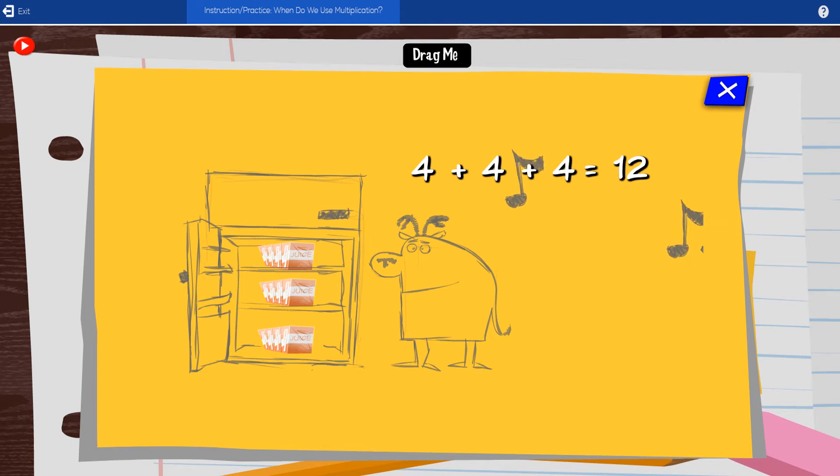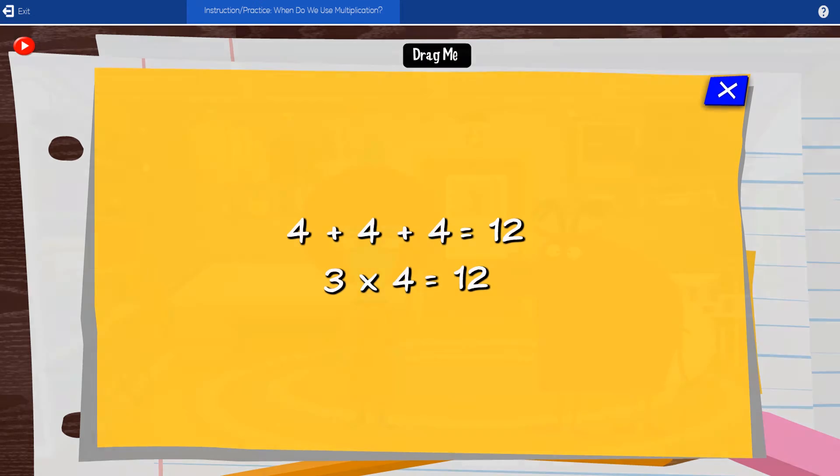What JT didn't realize was that three groups of four is the same as three times four. He could have just multiplied three times four to get twelve. Both strategies let JT find that he had twelve juice boxes, just enough for each of his friends.